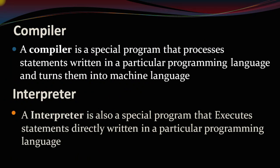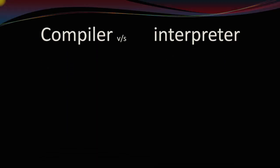What is a compiler? A compiler is a special program that processes statements written in a particular programming language and turns them into machine language. There is one more translator called an interpreter. An interpreter is also a special program that executes statements directly written in a particular programming language. By the definitions, we feel both are the same, so let us look at the differences between them.